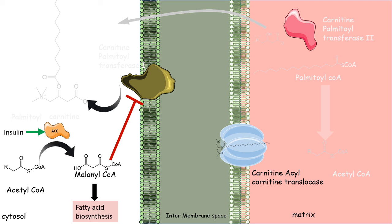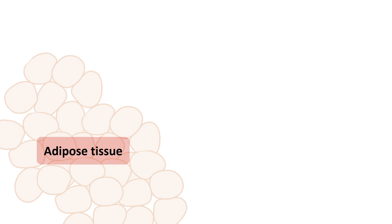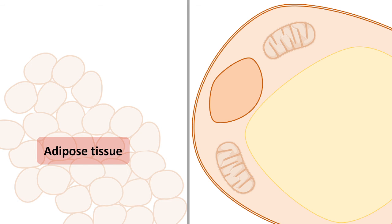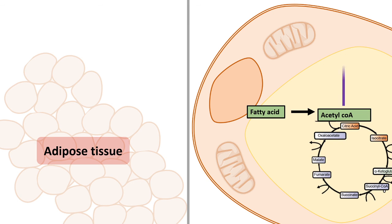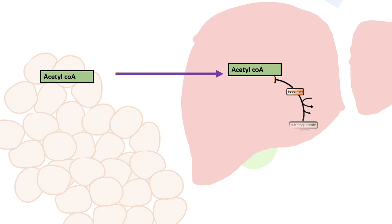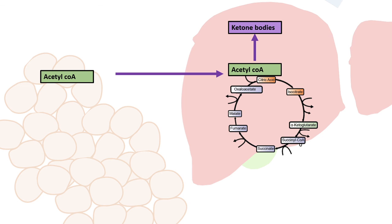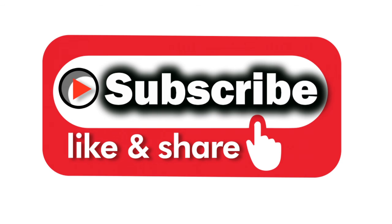In summary, hormones such as insulin and glucagon, along with metabolic state, modulate the decision between fatty acid breakdown and fatty acid biosynthesis. Under fasted conditions, adipose tissue releases fatty acids, which generate acetyl-CoA in the liver. This acetyl-CoA can enter the TCA cycle or generate ketone bodies. Ketone bodies are very important as they provide fuel for the brain in a fasted situation.